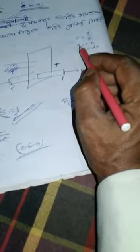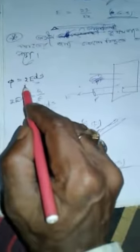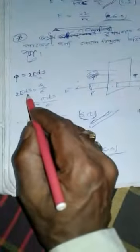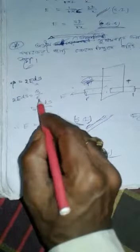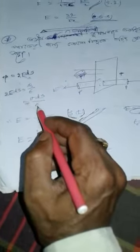So, what is sigma? Sigma is equal to q by a, and the first part is sigma into a. A means ds, so sigma into ds. And flux phi is equal to 2 into e ds, and 2e ds is equal to q by epsilon, and q is equal to sigma ds by epsilon.